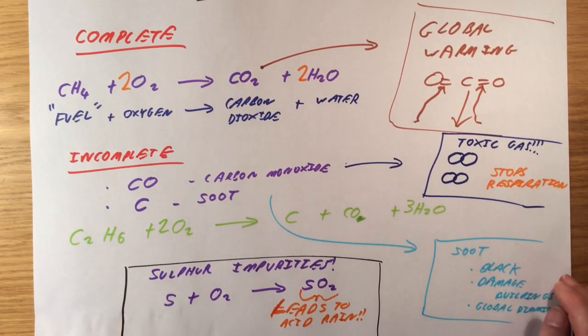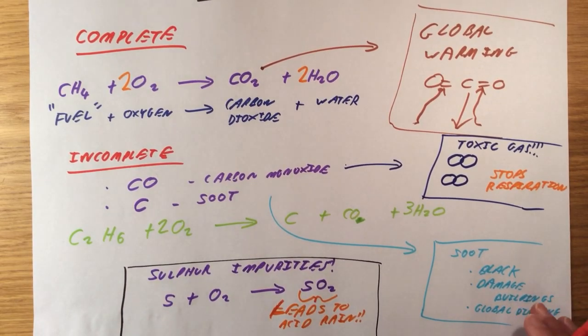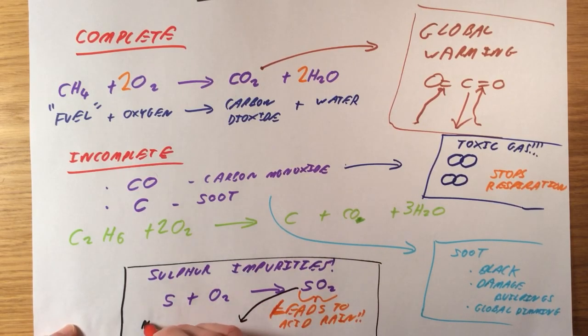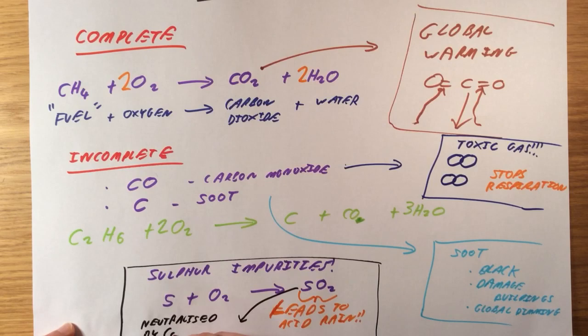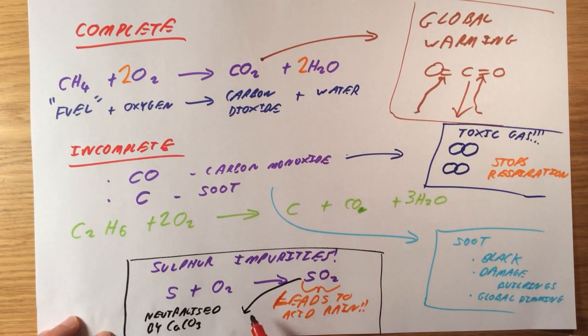So it actually forms sulfuric acid when it comes in contact with water, which can do things like kill trees and corrode limestone, etc. So that's a bit of an issue. So what we actually do to stop this is we try and neutralize this sulfur dioxide when it's produced. You don't need to know masses about this for AQA, but for Edexcel, you do need to know that we can use calcium carbonate. So neutralized by calcium carbonate in power station chimneys, and that stops SO2 being emitted.